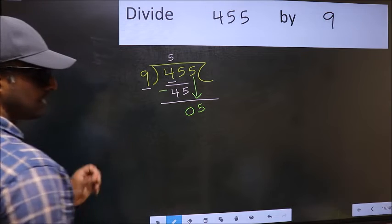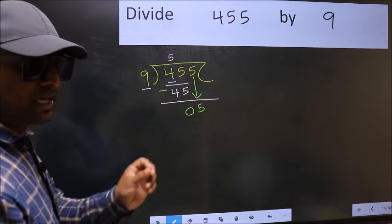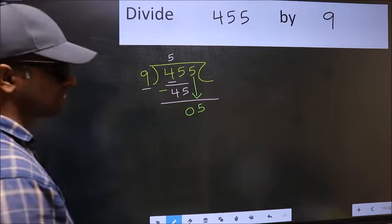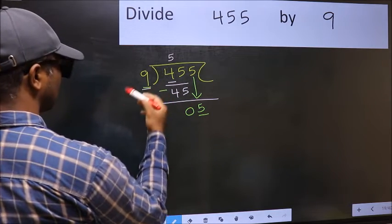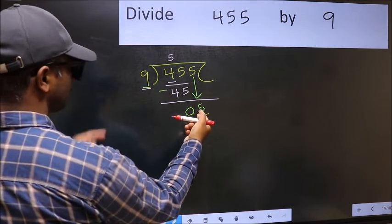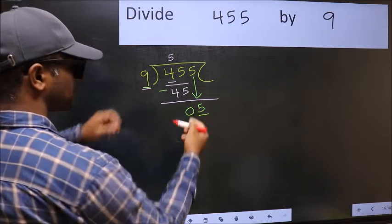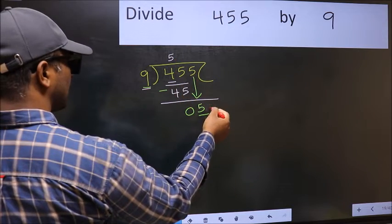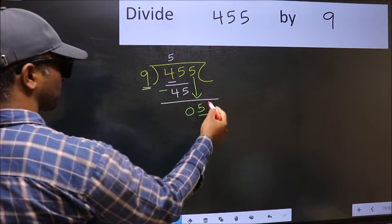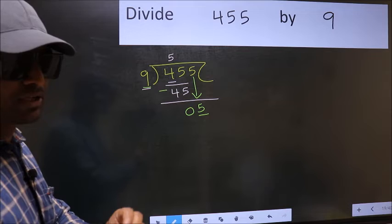After this step, the mistake happens. And the mistake is this: Here we have 5 and here 9. 5 is smaller than 9. So what many do is, they directly put dot and take 0, which is wrong.